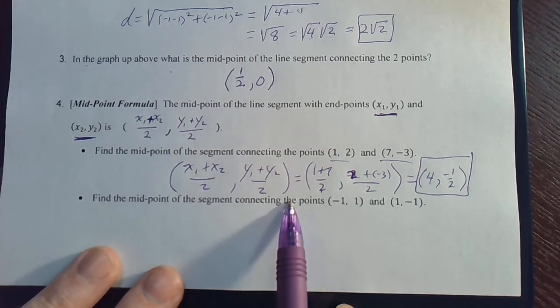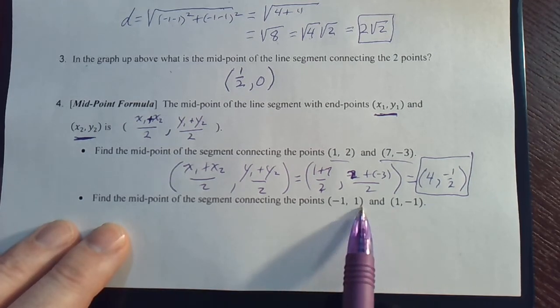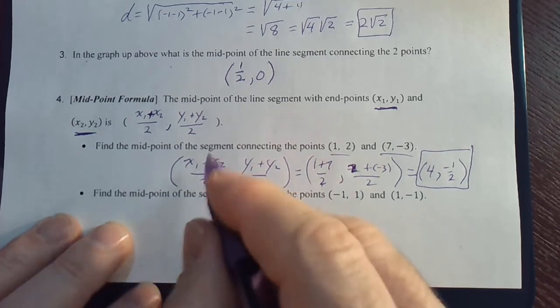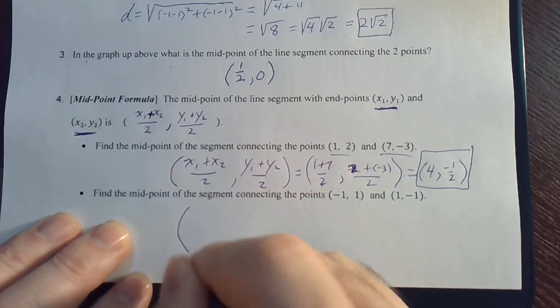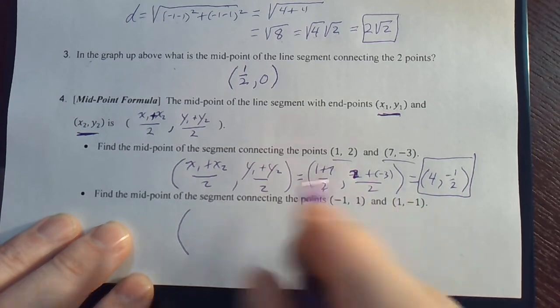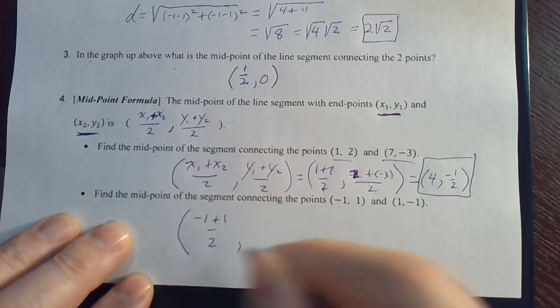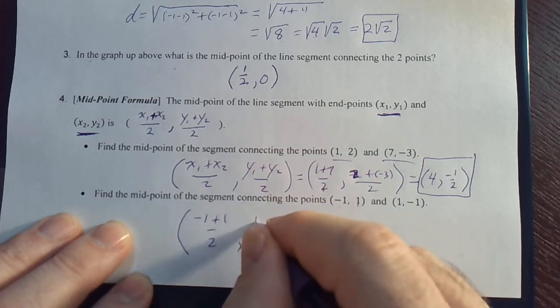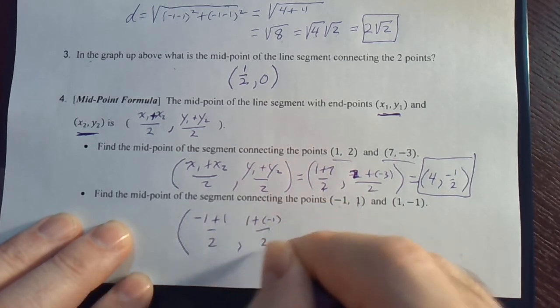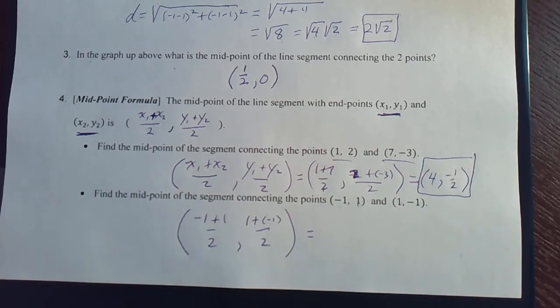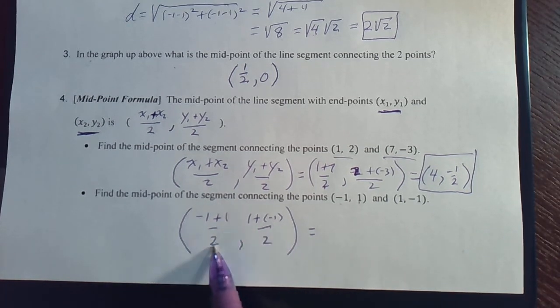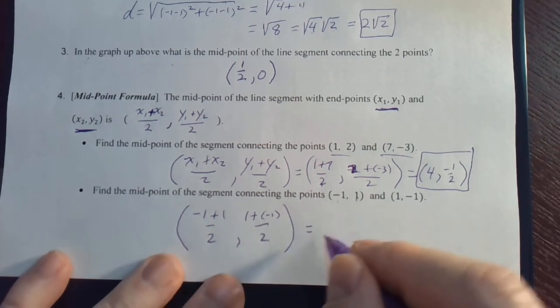Find the midpoint of the segment connecting these two points. Negative 1, 1, and 1, negative 1. We've got negative 1 plus 1 over 2, comma, now the y values, 1 plus negative 1 over 2. So, how does that simplify? 0 over 2, which is 0. 0 over 2. That's the origin.